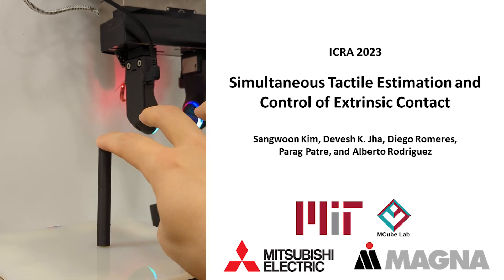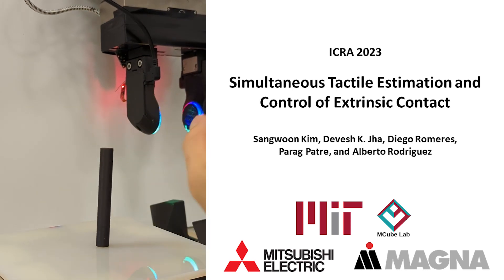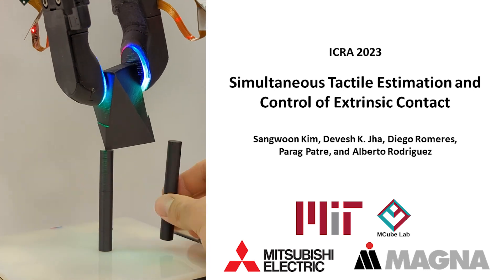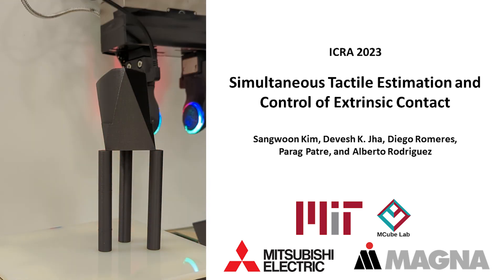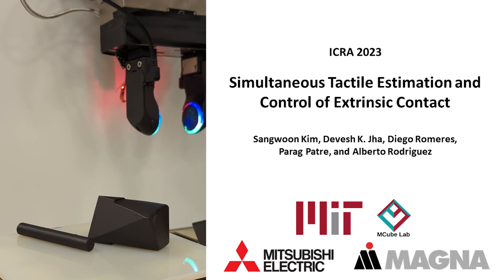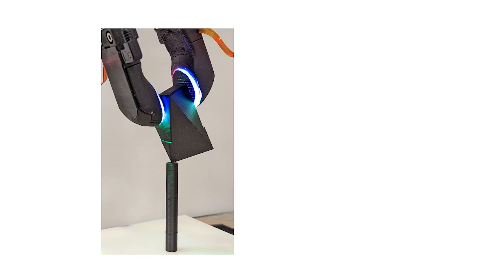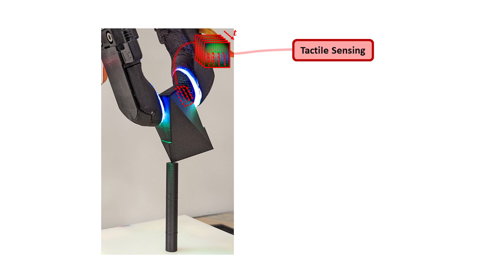In this paper, we propose a simultaneous tactile estimation and control to accurately control the interaction forces at contacts between a grasped object and the environment through the regulation of tactile feedback. Imagine the case where we want to control an unknown grasped object that is in contact with a freestanding vertical rod. We study how tactile sensing can be used in these types of situations, which requires reasoning about the contact between the grasped object and its environment.